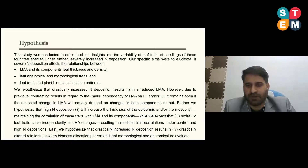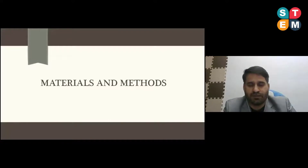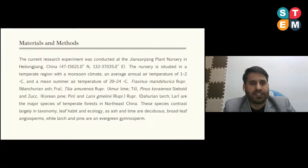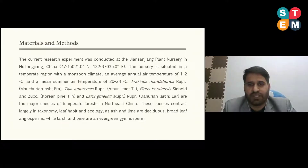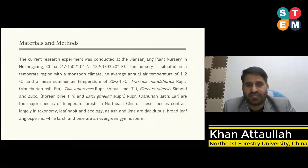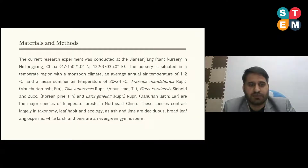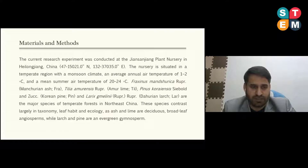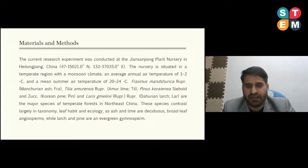Materials and Methods: This study was conducted at Jiansanjiang Plan Nursery in Heilongjiang, China. The nursery is situated in a temperate region with a monsoon climate, with an average annual temperature of 1 to 2 degrees centigrade and average summer temperature of 22 to 24 degrees centigrade. Fraxinus mandshurica, Tilia amurensis, Pinus koraiensis, and Larix gmelinii are the major species of temperate forest in northeast China. These species contrast largely in taxonomy, leaf habit, and ecology. Fraxinus and Tilia are distributed broadleaf deciduous angiosperms, while Larix and Pinus are evergreen gymnosperms.